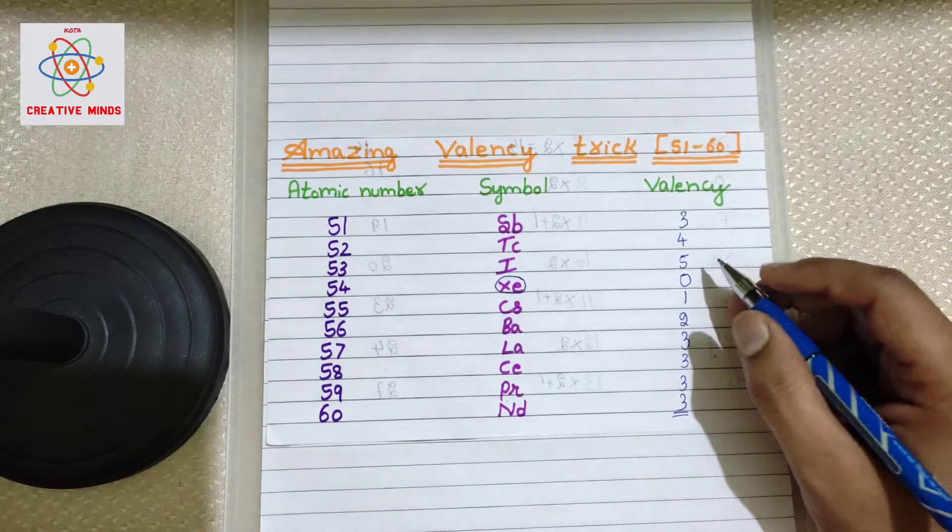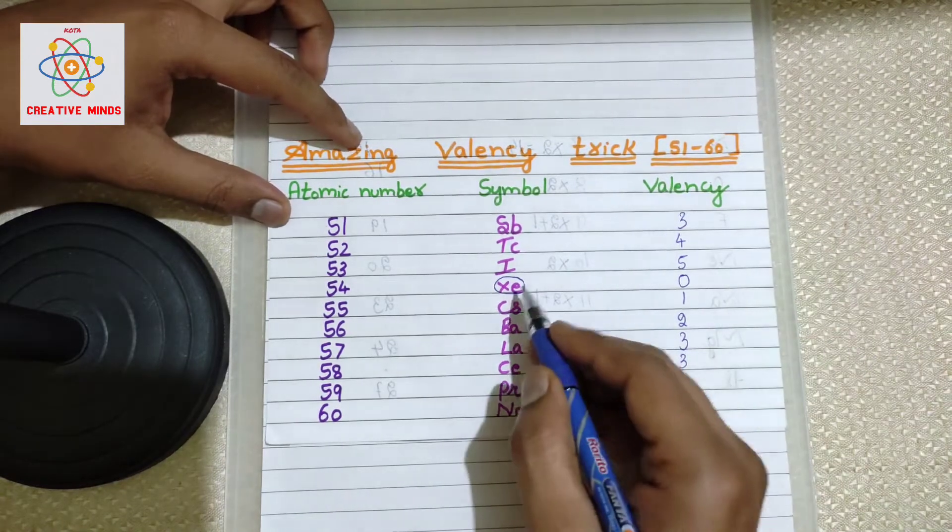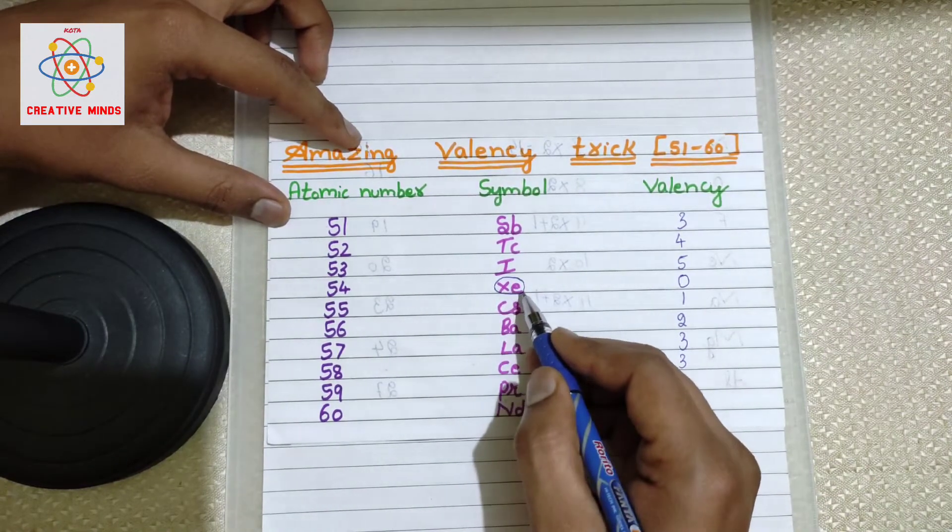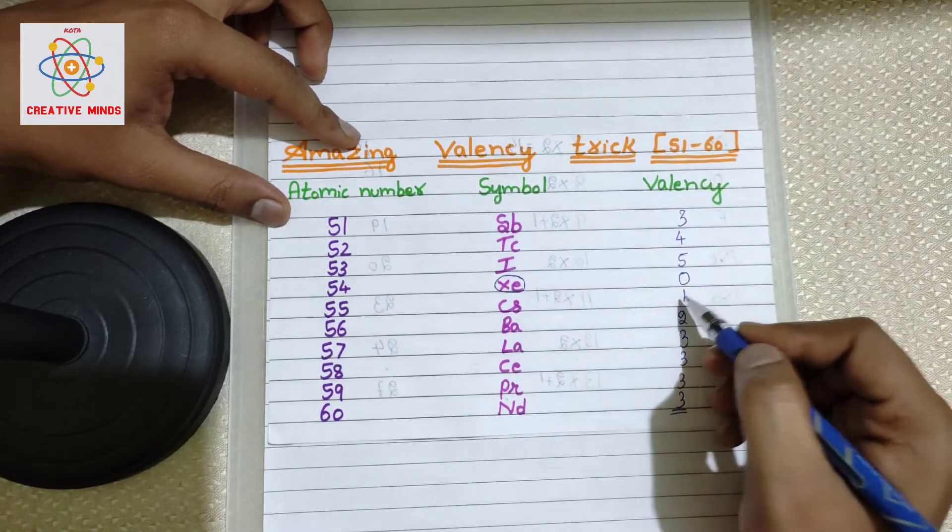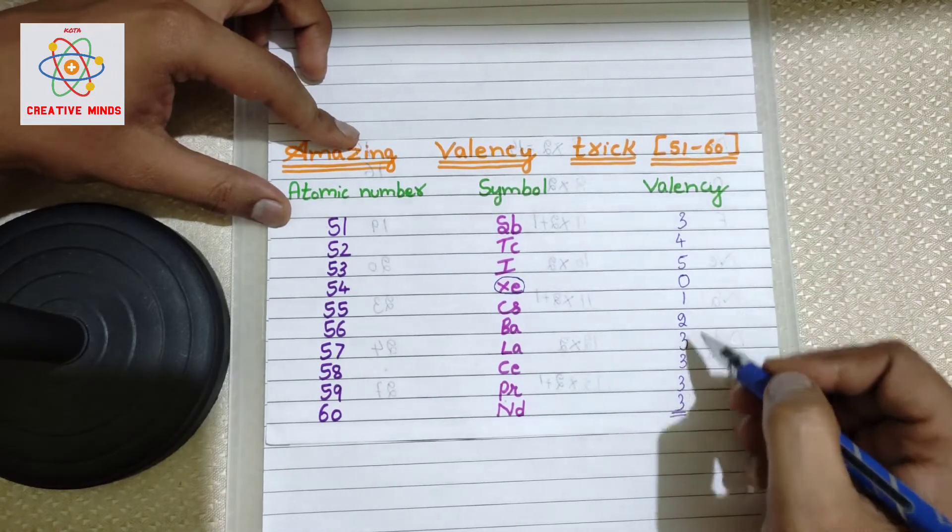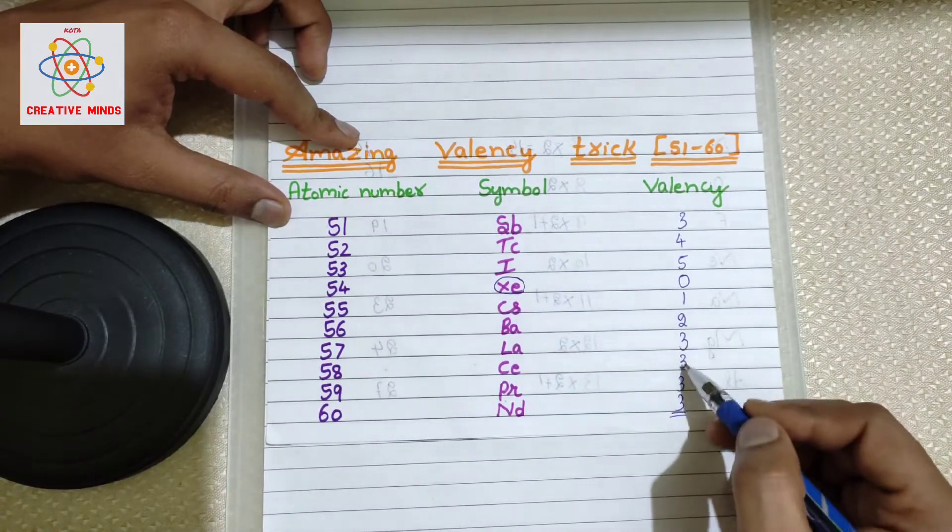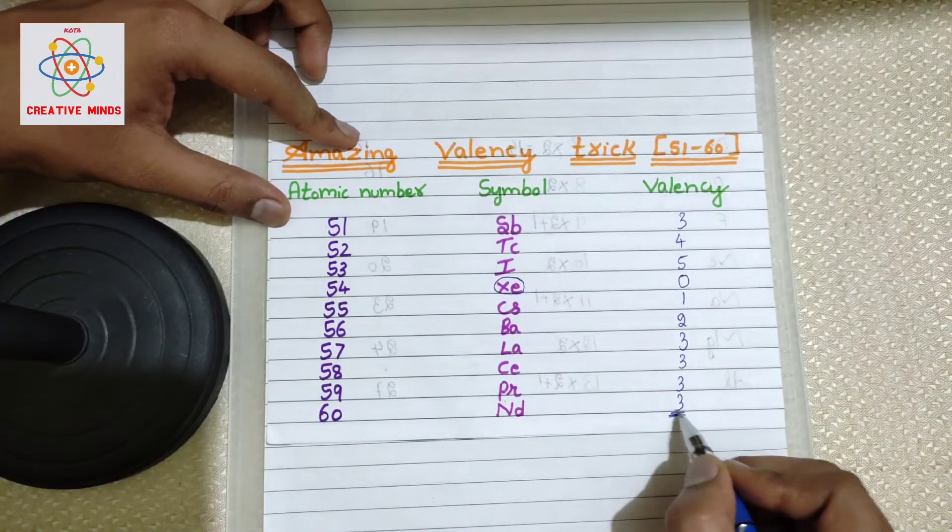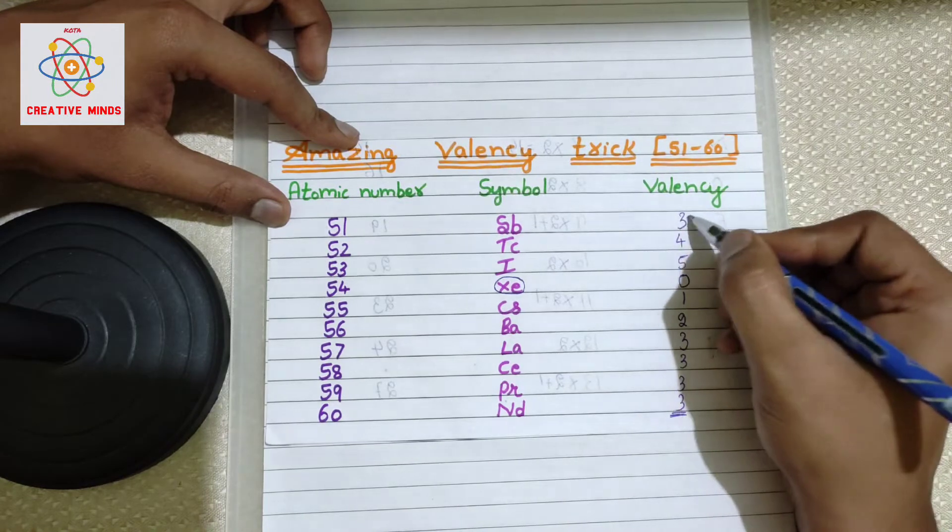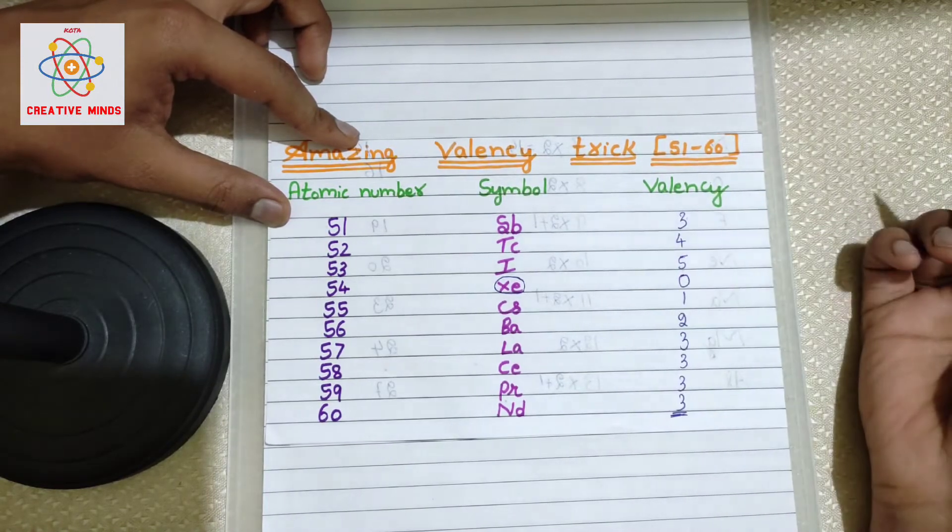In within few seconds, you can write the valences from 51 to 60. Let's repeat once more. First, focus on the noble element, valency is zero. Next proceed: zero, one, two, three. Then remaining all elements' valency will be three itself: three, three, three. To which number we have ended? Three. So start from three only: three, four, five. That's all, you got your valences.